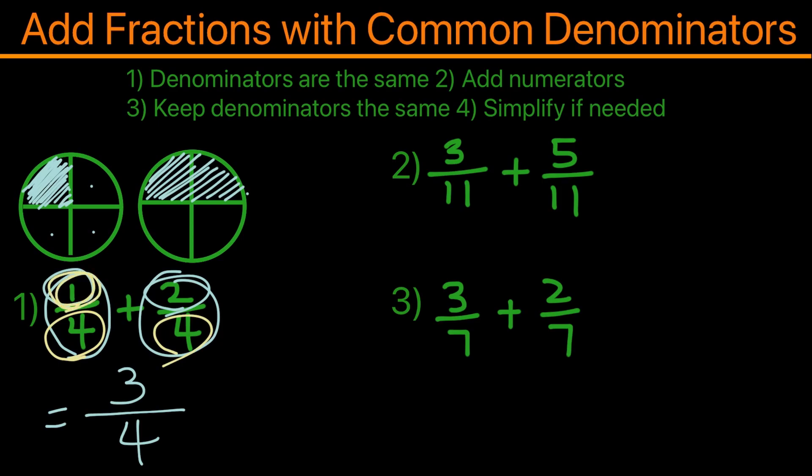Then the third step is keeping the denominators the same, and that's what we did here. And lastly, simplify if needed. No further simplification is needed; we left it exactly at 3/4, and so that would be the answer here. Now for the second example...